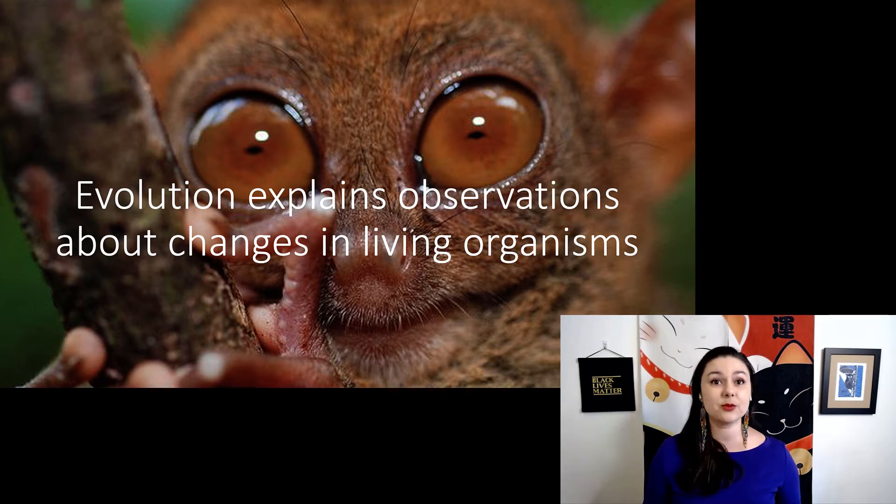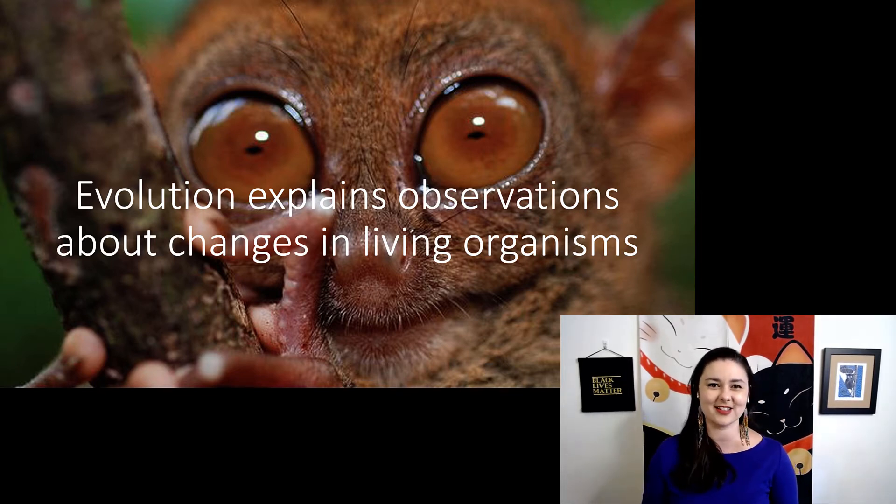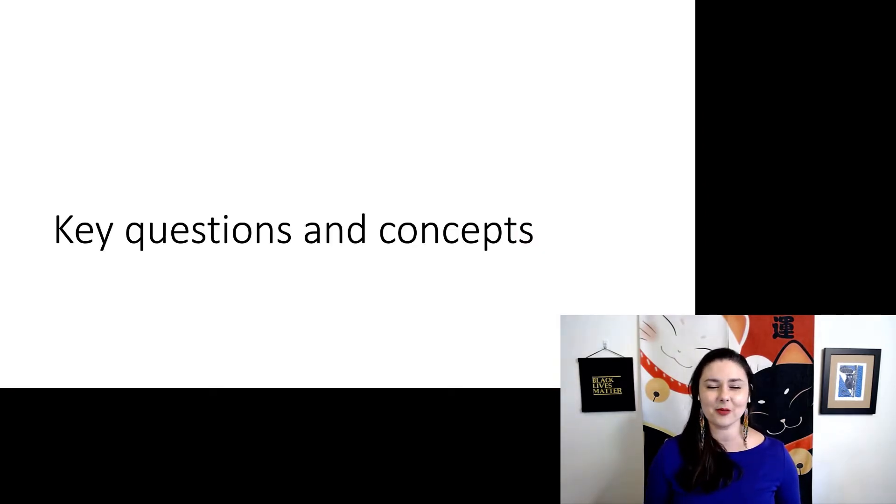Evolution explains the observations we can see in living organisms. It explains the changes we see between different species that are closely related, like comparing wolves to domesticated dogs. But it also helps us understand what happened in the fossil record, so we can compare a living organism today with a fossil that we think is its ancestor. Evolution tells us about all of that, but just think about how many species exist. That's a lot to explain. And that's one of the reasons why there's just so many different concepts within evolution. So let's talk about a few that are important.